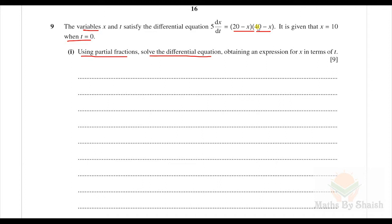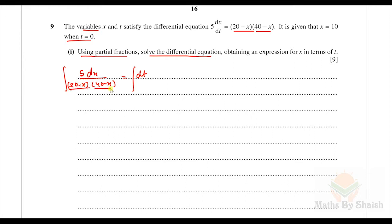We can use variable separation here because we have dt and dx, and it is the product of two terms in x. So it becomes dx / [(20 − x)(40 − x)] = dt/5. To solve this we need partial fractions because we have the product of two linear factors in the denominator.